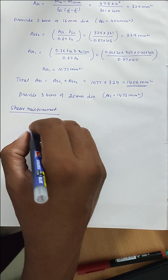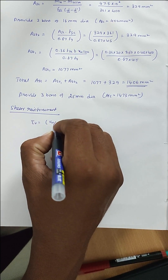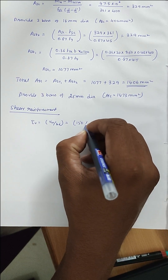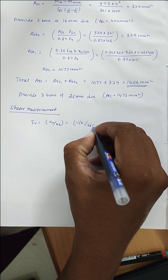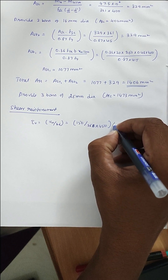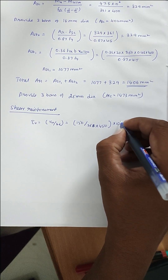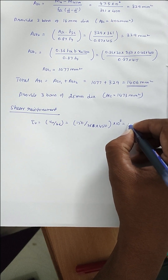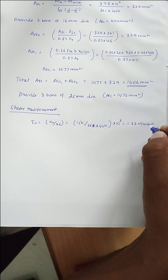Now for shear reinforcement. τv = VU / (b × d) = 150 × 10³ / (250 × 450) = 1.33 N/mm².